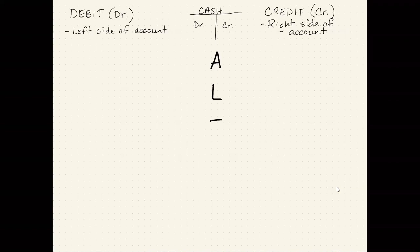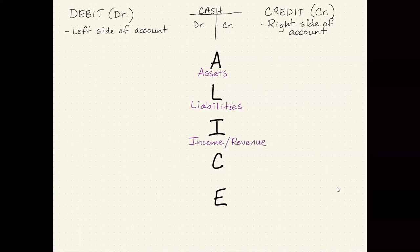Now, each letter in Alice refers to a specific type of account that you've already learned about. So A is going to represent assets, L will represent liabilities, I will represent income, which we more commonly refer to as revenue, C will be capital, and E will be expenses.